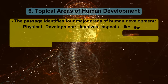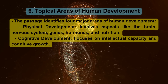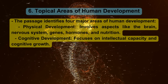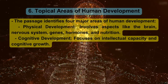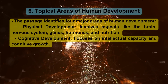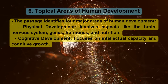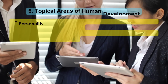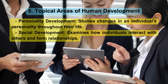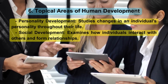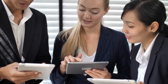Topical areas of human development: The passage identifies four major areas. Physical development involves aspects like the brain, nervous system, genes, hormones, and nutrition. Cognitive development focuses on intellectual capacity and cognitive growth. Personality development studies changes in an individual's personality throughout their life. Social development examines how individuals interact with others and form relationships.